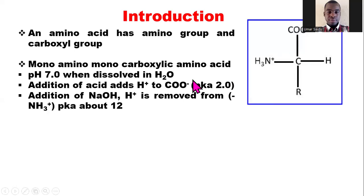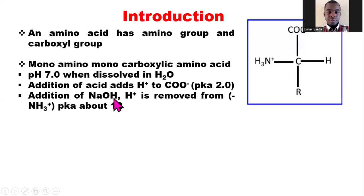There are no useful indicators for these pH ranges, but titrations can be carried out using a pH meter to monitor pH changes. In this way, amino acids can be estimated quantitatively. When we add formaldehyde to the solution, we are reacting with the uncharged amino group to form addition compounds.